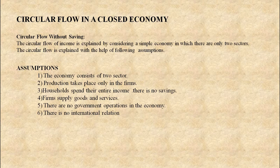The entire explanation of circular flow of income in a closed economy depends upon various assumptions. There are six assumptions. Number one: the economy consists of two sectors, households and firms. Second: production takes place only by firms. Third: households spend their entire income — there is no saving. Fourth: firms supply goods and services. Fifth: there are no government operations in the economy. And sixth: there is no international relation, meaning the economy is closed.